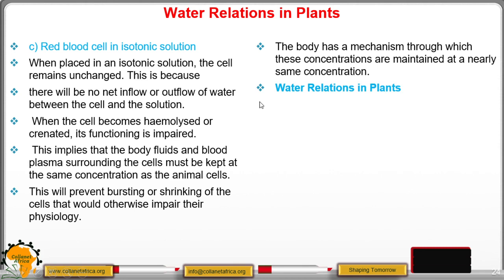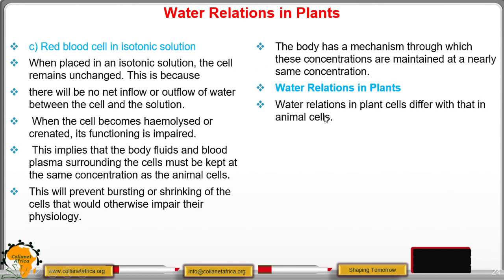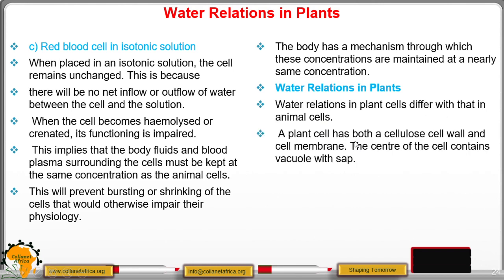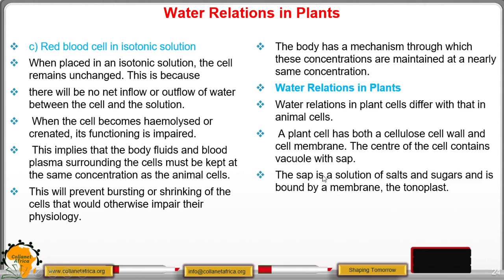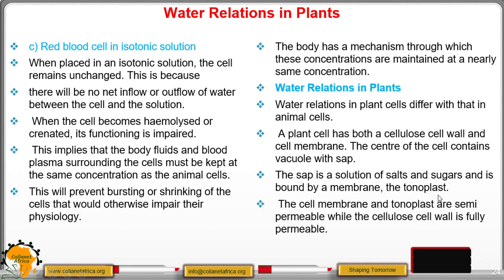Now that we know how animal cells relate to water, we can look at water relations in plants. Water relations in plants is different from that of animal cells, because a plant cell has both a cell wall and a cell membrane, and the center of the cell contains a vacuole filled with sap — a solution of salts and sugars — surrounded by a membrane called the tonoplast. The cell membrane and the tonoplast are semi-permeable, while the cellulose cell wall is fully permeable, allowing both small and large molecules to pass through.